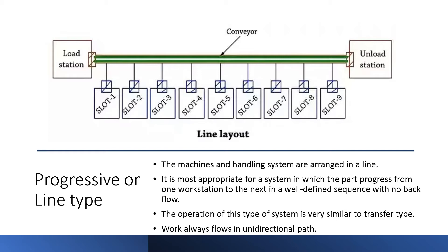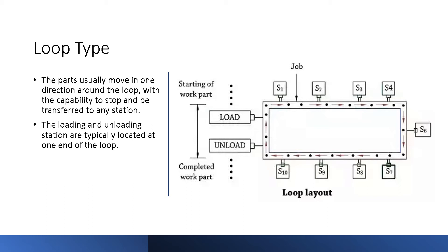Loop type: the part usually moves in one direction around the loop, with the capability to stop and be transferred to any station. As we can see, the loading and unloading stations are typically located at one end of the loop.